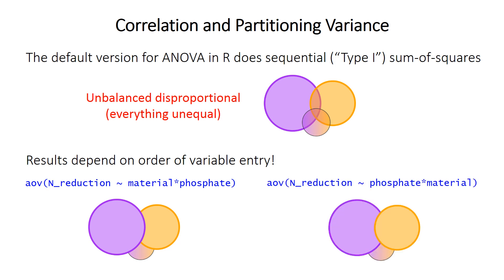If you swap the order and put phosphate first, phosphate gets all of its sum of squares, material gets its portion excluding what was given to phosphate, and interaction gets the leftovers. In this way, you end up overestimating the significance of the factor listed first, because it's being given sum of squares not actually influenced by that variable — the overlapping area is assigned entirely to whichever factor is listed first.